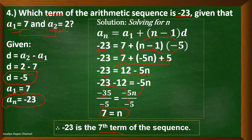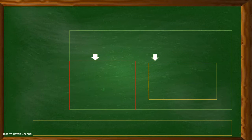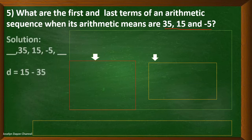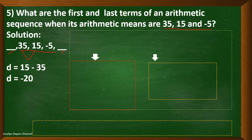Now let's have example number 5. What are the first and last terms of an arithmetic sequence when its arithmetic means are 35, 15, and negative 5? We can illustrate the problem with the three arithmetic means in the middle and the first and last terms unknown. We can find the common difference since we have consecutive terms: 15 minus 35 equals negative 20, or negative 5 minus 15 also equals negative 20.